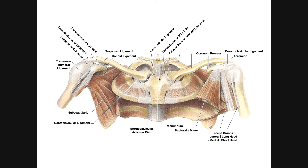Up here is the jugular notch of the manubrium. And then the articulation part of the manubrium with the clavicle is the clavicular notch. So here would be the right clavicular notch, and this is the left clavicular notch.